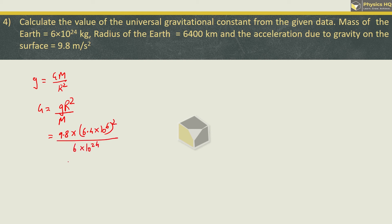This becomes 9.8 × 6.4² × 10¹² divided by 6 × 10²⁴, which is 10⁻¹². We need to solve this using logarithms. We will get the answer as 66.72 × 10⁻¹², or you can write capital G value as 6.672 × 10⁻¹¹ newton meter squared per kg squared.